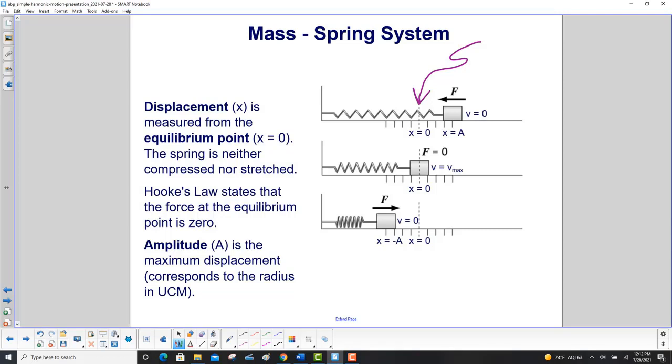Amplitude is the maximum displacement. In this case, here's your equilibrium. If you pull the spring out to here, that distance A is the displacement. That corresponds to the radius in uniform circular motion.